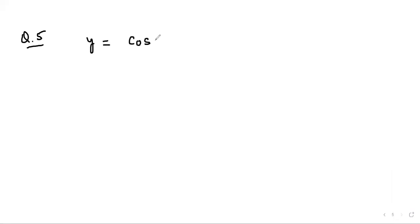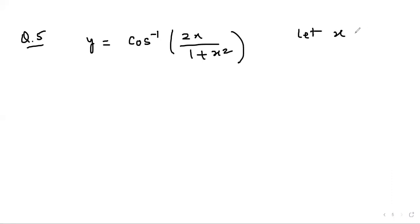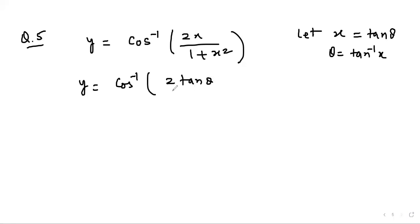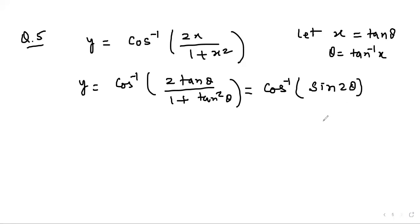Question 5: y = cos⁻¹(2x/(1 + x²)). Let x = tan θ, so θ = tan⁻¹ x. Substituting gives cos⁻¹(sin 2θ). We need to convert sin into cos; using cos(π/2 − θ) = sin θ, we get sin 2θ = cos(π/2 − 2θ).